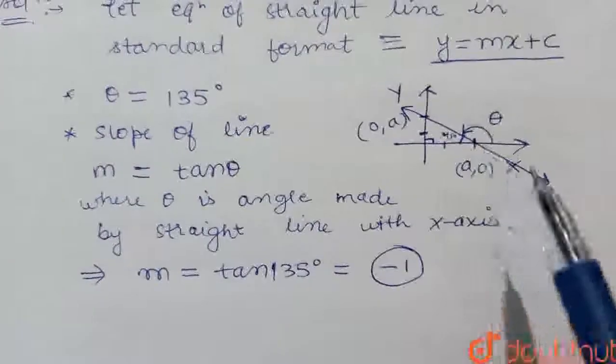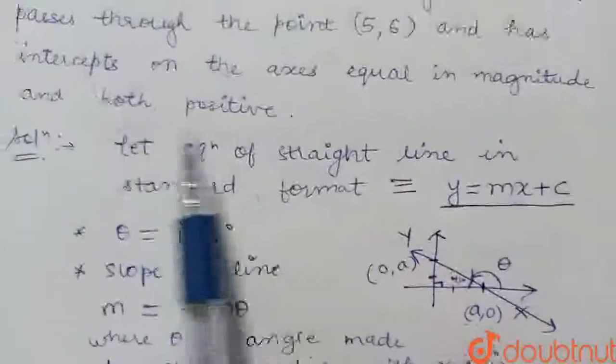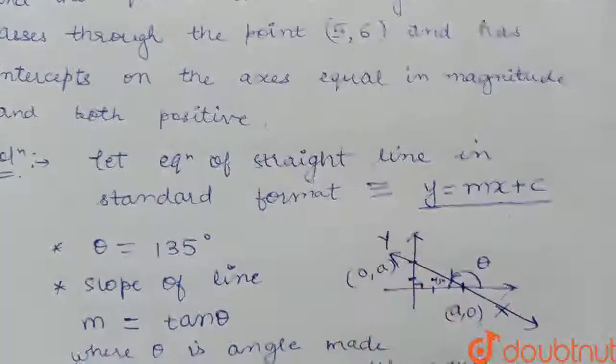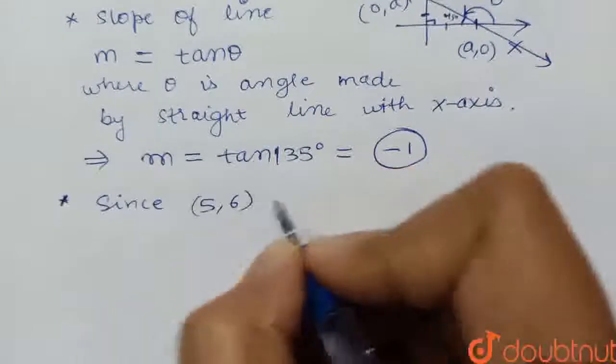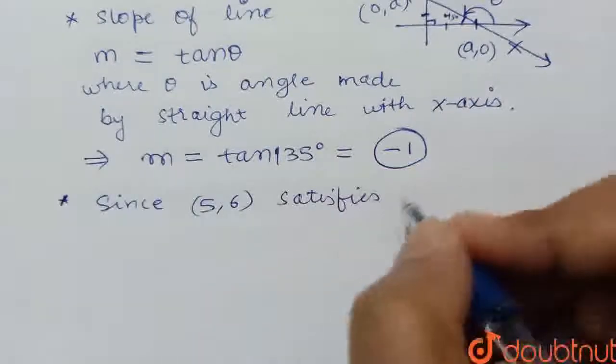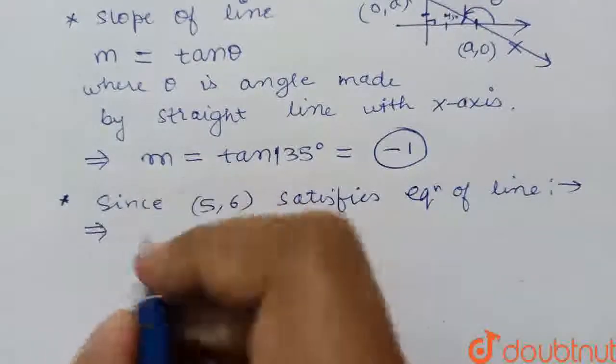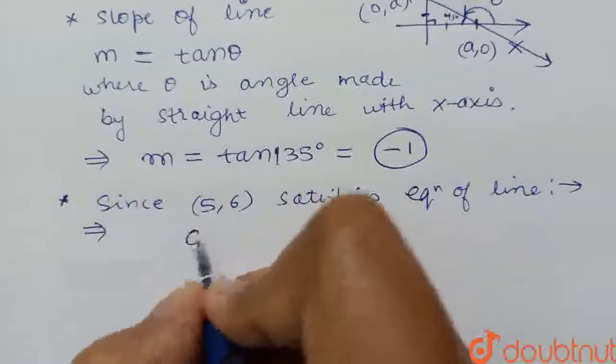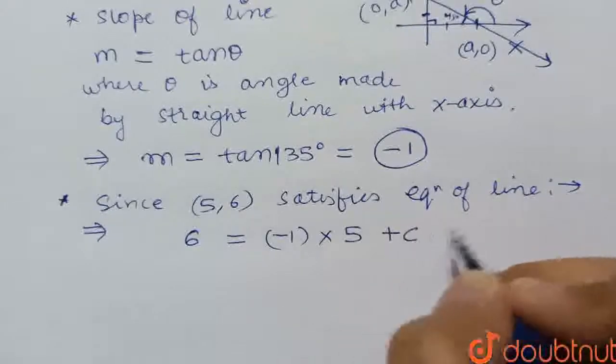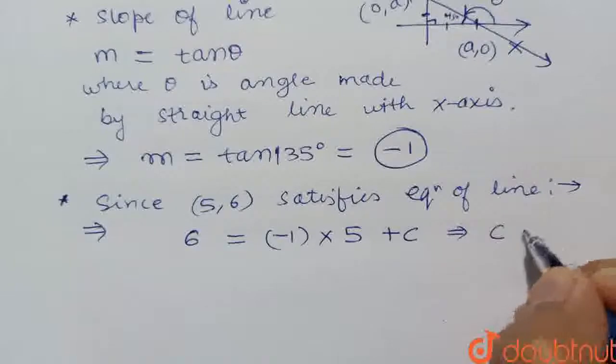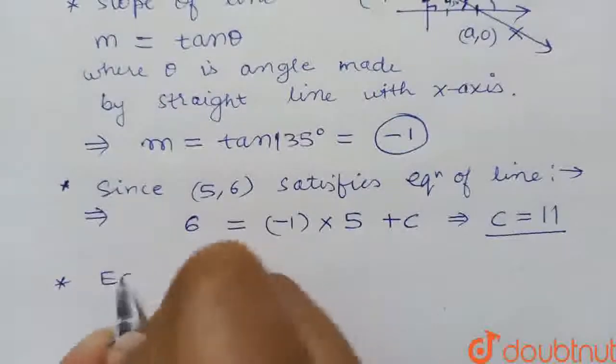Now our equation becomes y = -x + c. We can find c using the second set of information: point (5,6) lies on the line. Since (5,6) satisfies the equation of the straight line, we get: 6 = (-1) × 5 + c. That implies c equals 11. c is 11, m is -1, so our straight line equation is the equation of the straight line.